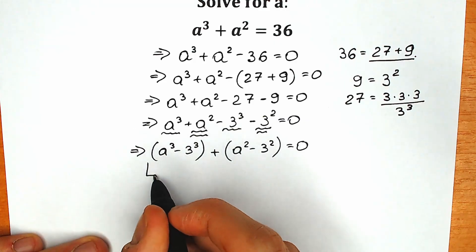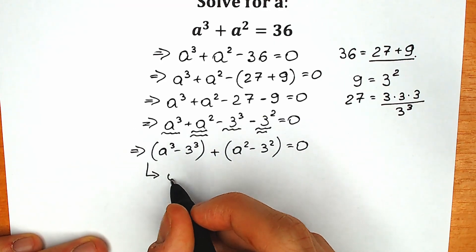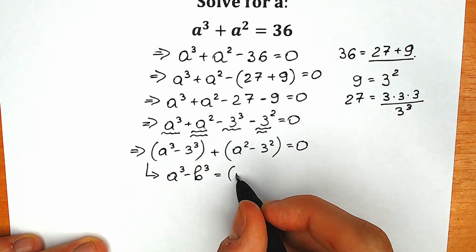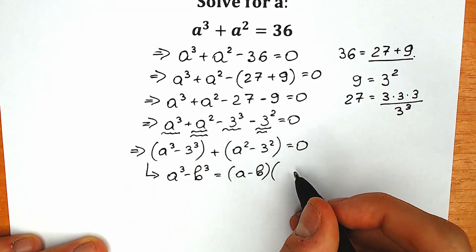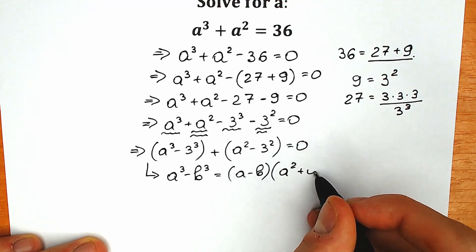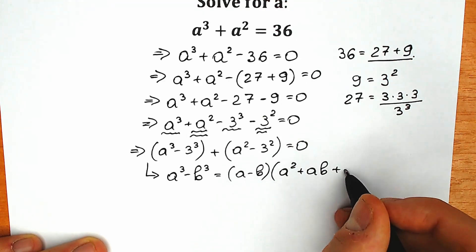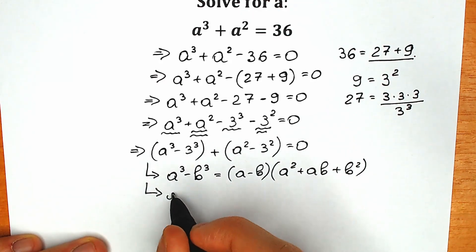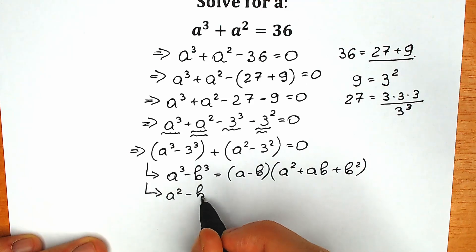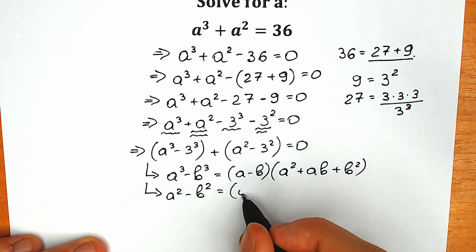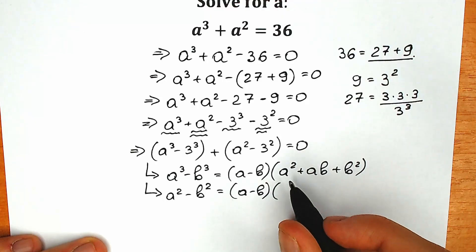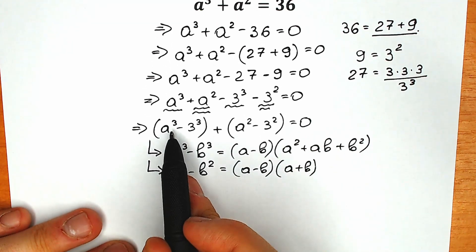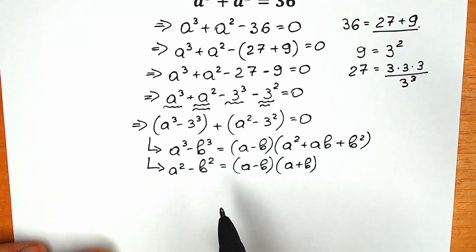In the first parenthesis, let's group our cubes: a cube minus 3 cube. And in the next parenthesis, plus, we have a square minus 3 square. Right now let's look closely — we have the difference of two cubes and the difference of two squares. Let's remember the formulas. The first formula: a cube minus b cube equals a minus b times a squared plus ab plus b squared. And the second formula: a squared minus b squared equals a minus b times a plus b.